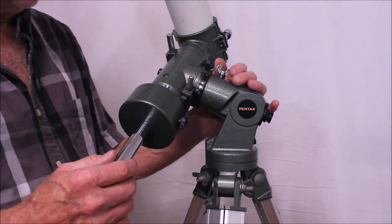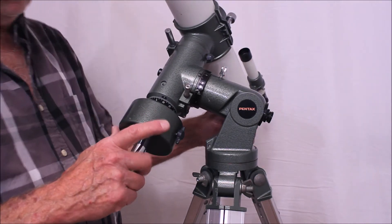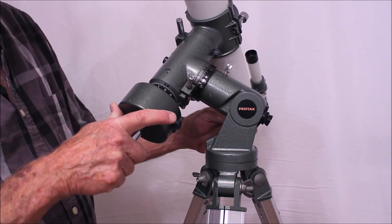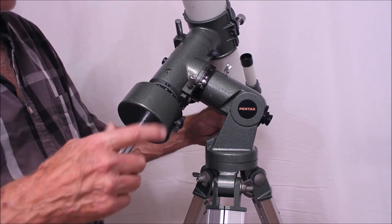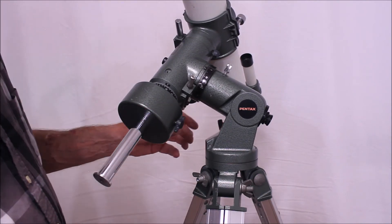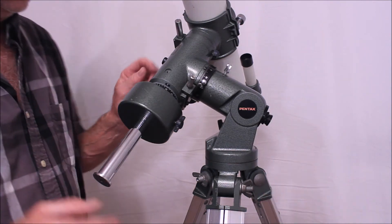In order to polar align this scope, first of all, you're going to aim it north pretty close as best you can. Lock it down and so forth. You're going to have to look through the little polar alignment scope here.